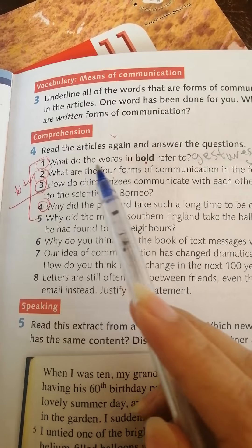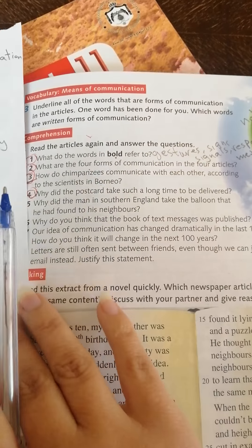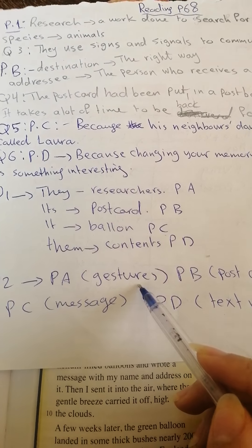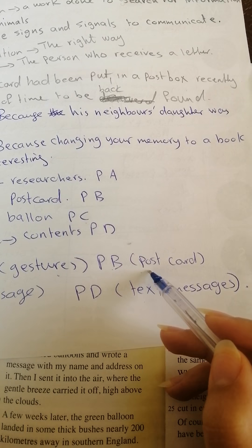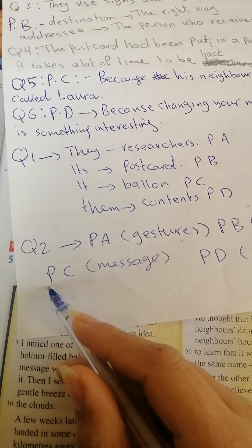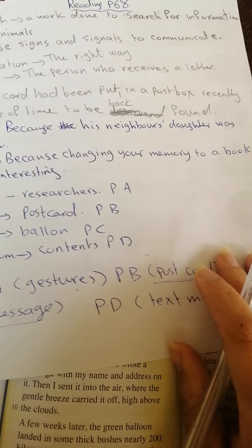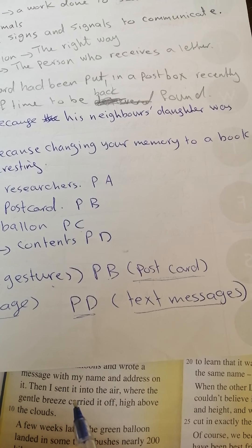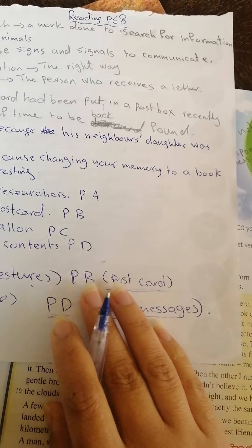Question two: What are the four forms of communication in the four articles? In paragraph A, the form of communication is gestures, especially among chimpanzees. In paragraph B, the form of communication was postcard. In paragraph C, the form of communication is a message written on a balloon. And in paragraph D, the form of communication was text messages, which discusses the woman who turned her text messages into a book and published it.